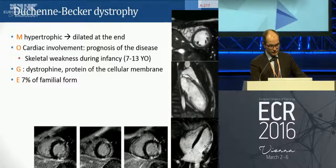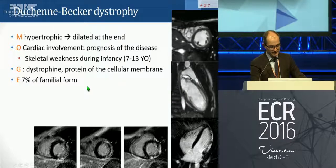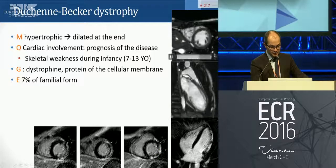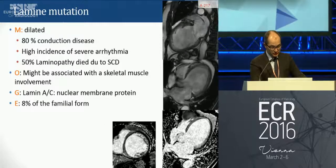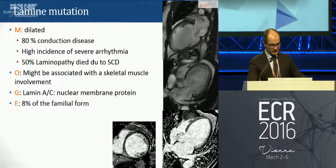An example is Duchenne-Becker dystrophy, linked to abnormalities in cellular membrane proteins, accounting for about 7% of familial forms. It can give a picture resembling myocarditis, and the prognosis is linked to the extent of cardiac involvement. The lamin mutation is the typical form of dilated cardiomyopathy, with no specific MR signs. However, this lamin mutation is linked with a high incidence of severe arrhythmia, and many patients with this abnormality die from sudden cardiac death.